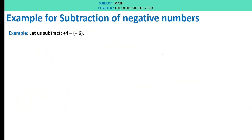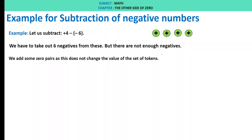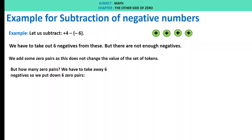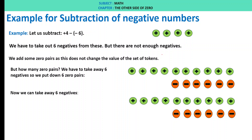Example for subtraction of negative numbers. Let us subtract plus 4 minus of minus 6. We have 4 positives but need to take out 6 negatives — there are not enough negatives. So we add some zero pairs; this does not change the value. We put out 6 zero pairs: 10 positives total. Now we take away 6 negatives and are left with 10 positives. Therefore, 4 minus of minus 6 is plus 10.